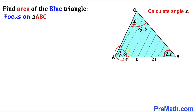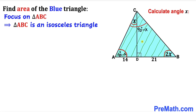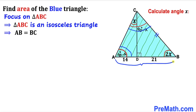We can observe that angle alpha is 90 minus x and the angle at C is also 90 minus x. Therefore triangle ABC is an isosceles triangle. Since these two angles are congruent, side BC equals side AB. We know AB equals 14 plus 21, which is 35 units, so BC is also 35 units.